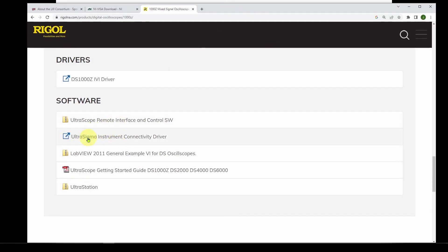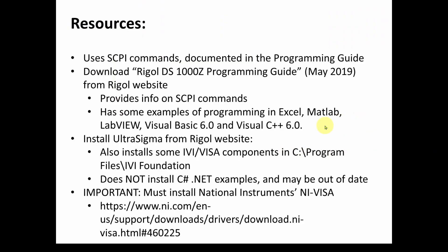Ultra Sigma is very important — it installs IVI VISA components to C:\Program Files\IVI. However, it does not include the C# .NET examples we need, and it may not be fully up to date. The most important thing to install is from the National Instruments website: the NI-VISA downloads, which include up-to-date drivers and the example C# solutions we'll use to build our application.